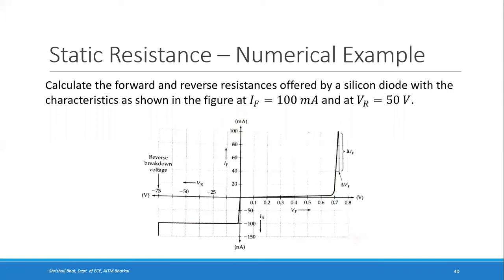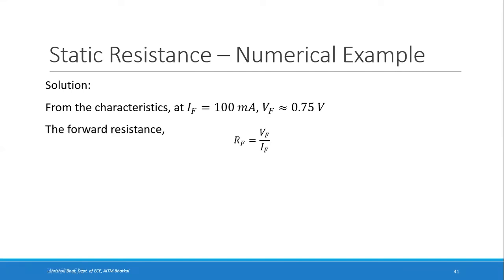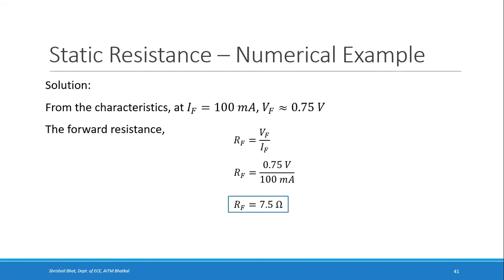Calculating RF: RF = VF / IF = 0.75 V / 100 mA = 7.5 ohms. This is a very small value, which makes sense because the diode conducts in the forward direction and offers little resistance. In the reverse direction, a diode ideally does not conduct, so it must offer a very high resistance.